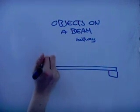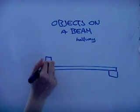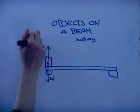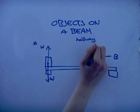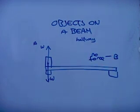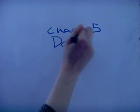If you place a mass at one end of the beam, for example at A, the upwards force at A would also be W and there would be no force at B. Chapter five done.